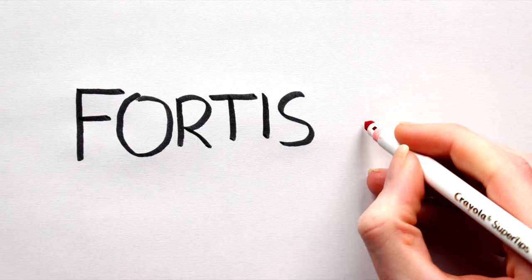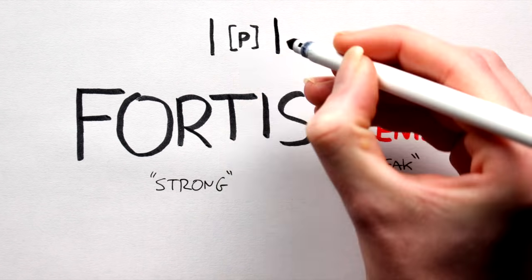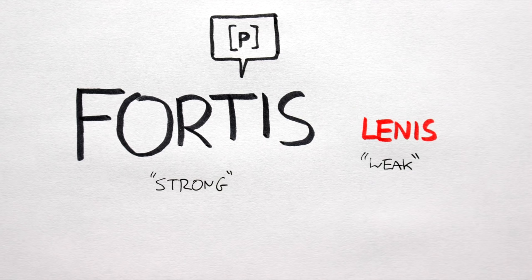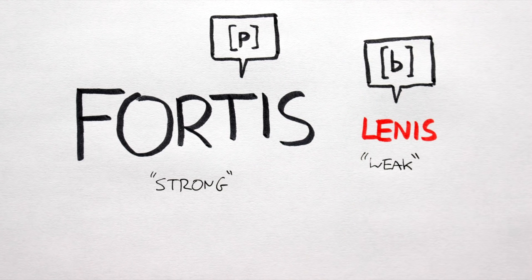The terms fortis and lenis, Latin for strong and weak, refer to the energy used in producing consonants. The paa in pan is a fortis consonant, and is produced with more energy than the ba in ban, a lenis consonant.